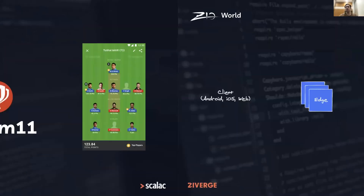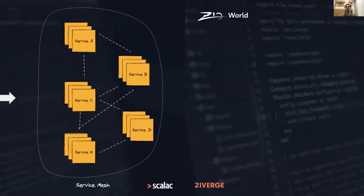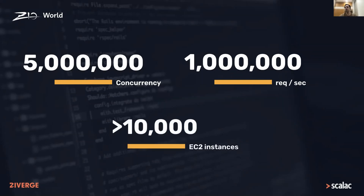At a very high level, this is how our architecture looks. We have a microservice mesh on the right and the clients on the left. The clients use our edge layer to query data from these services. For a typical use case, we get a concurrency of around 5 million users on a big game, producing around a throughput of 1 million requests per second. We reach these kinds of numbers very easily.